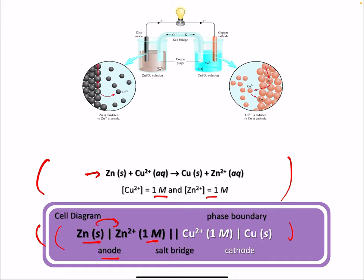This represents the salt bridge, separating the two half reactions. And then copper 2+ in its concentration, here's copper, as it's reduced at the cathode. So you'll see this as a way to write out these reactions.